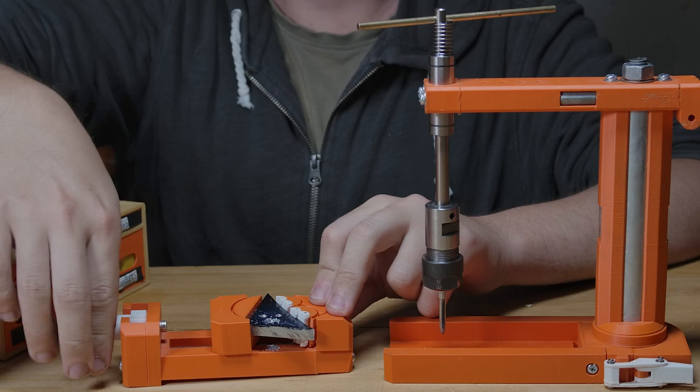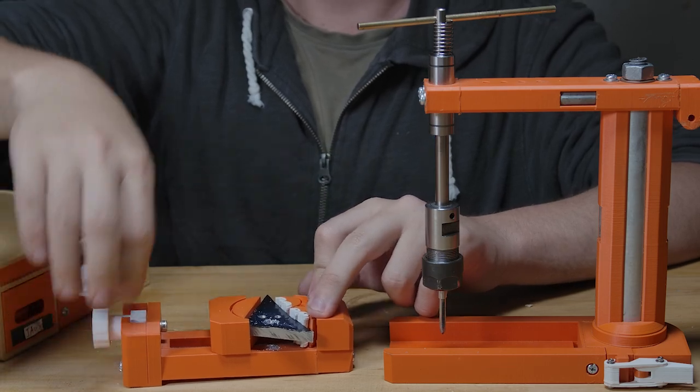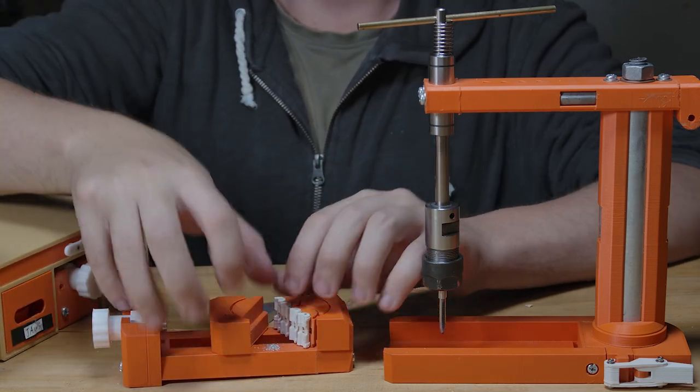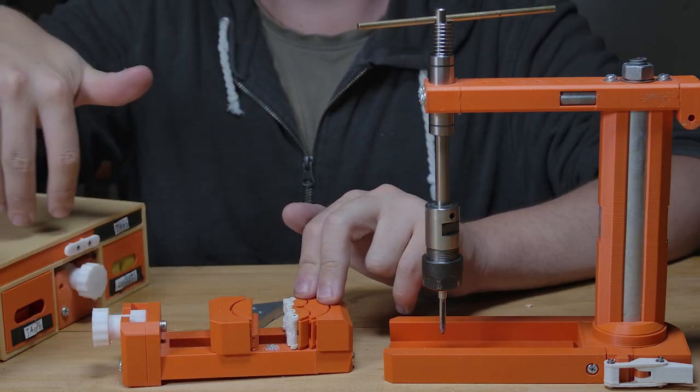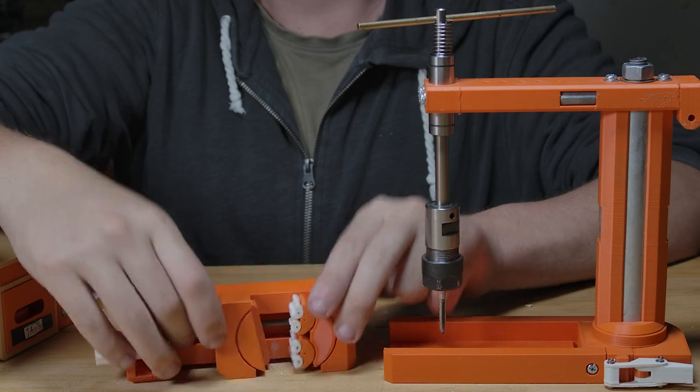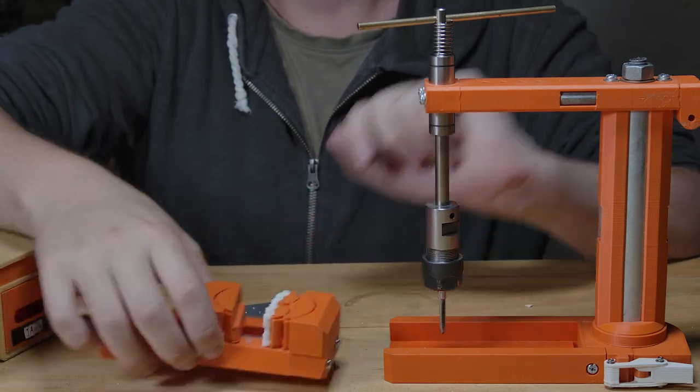But again, even if you're not tapping weirdly shaped parts like this often, it's not like a big deal to have these extra jaws. Like I think having this vise for the tube capabilities alone makes this worth having.